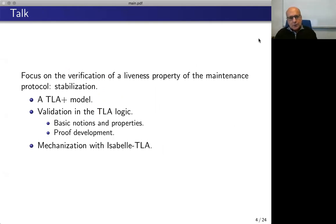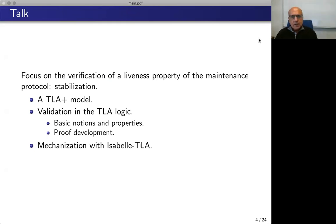In this talk, we will focus on the verification of a liveness property — that is the maintenance property of the maintenance protocol. More precisely, we will focus on the liveness of stabilization. We will establish this verification on the TLA Plus model. This validation will be done in the TLA logic, and we will also formalize the basic notions and properties required to reason on such networks and for the proof development. This work has been mechanized with Isabelle TLA. However, we will present the work in a TLA style instead of in Isabelle.